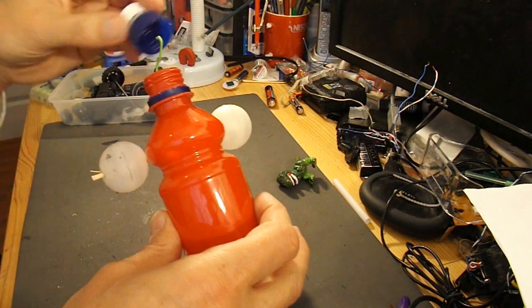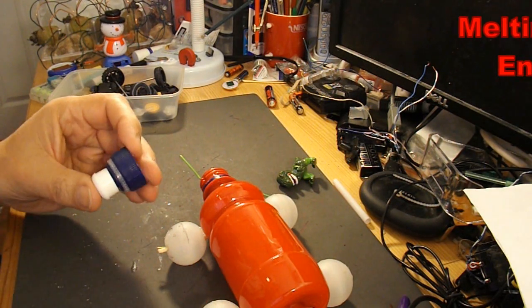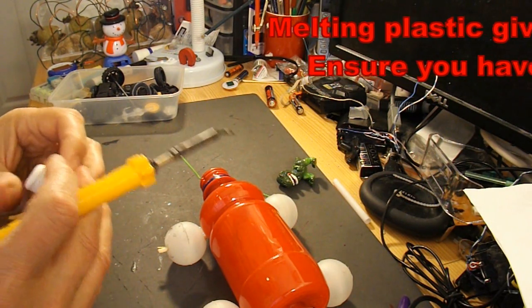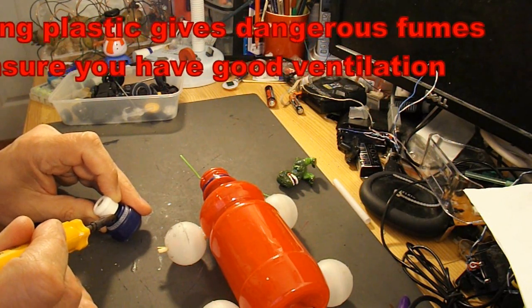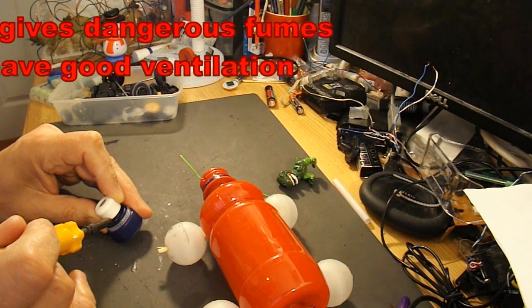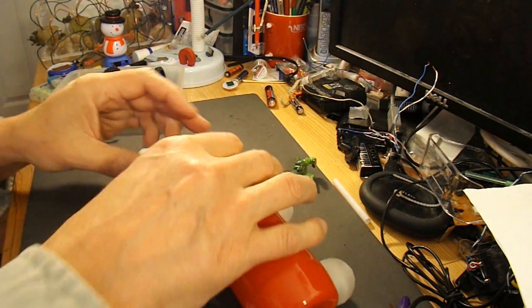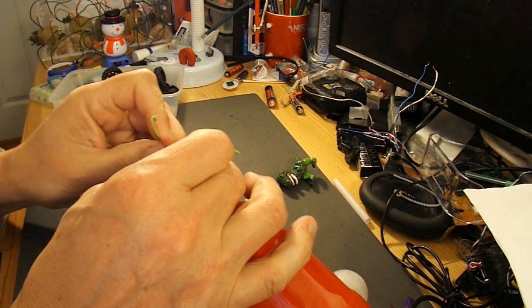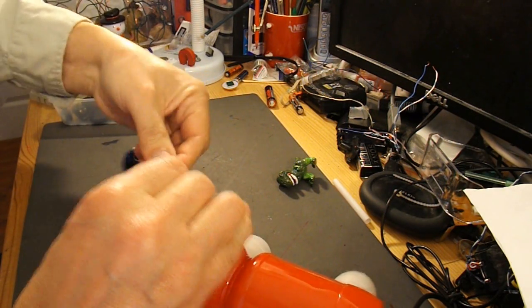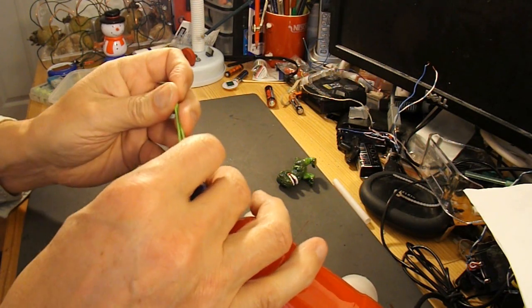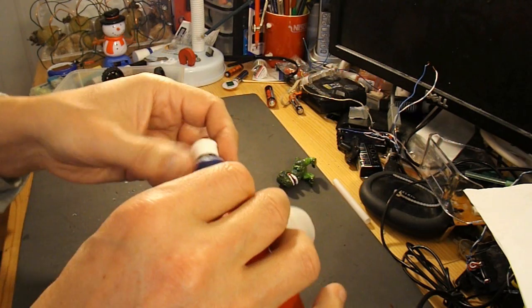Now we need to attach the rubber band to the front. Again, I think I'll just use my soldering iron to melt some holes through. In fact I only need one hole. So we'll use that to poke it through the hole again. And if we just flip that over the outside that will hold it in place for us.